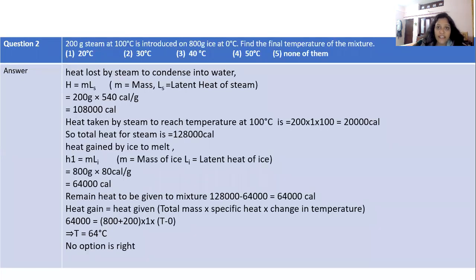Go for the second question. 200 grams steam at 100°C is introduced on 80 grams ice at 0°C. Find the final temperature of the mixture. Heat lost by the steam to condense into water.